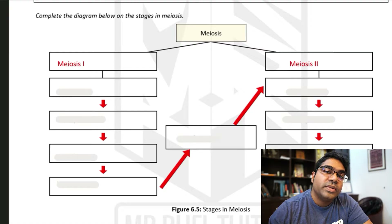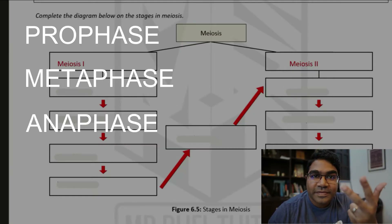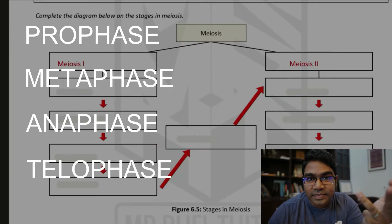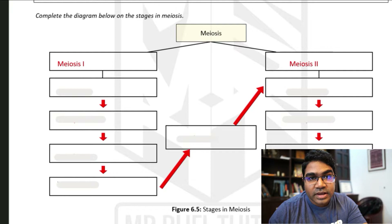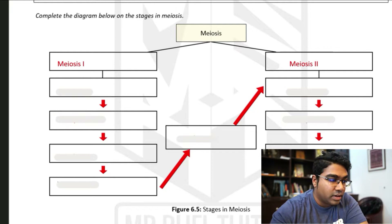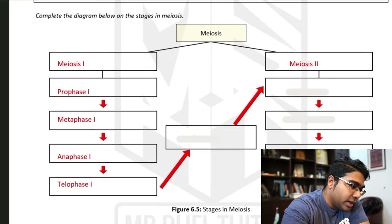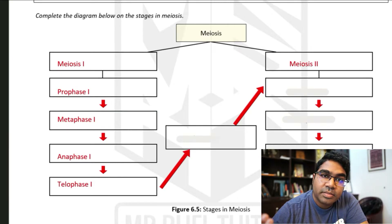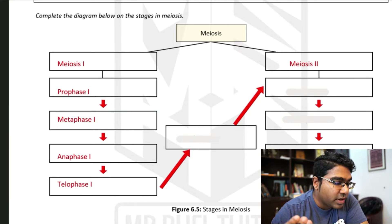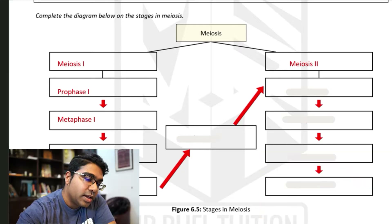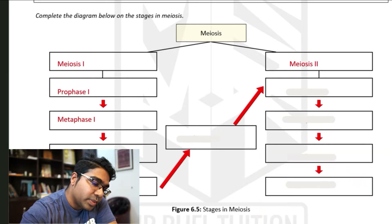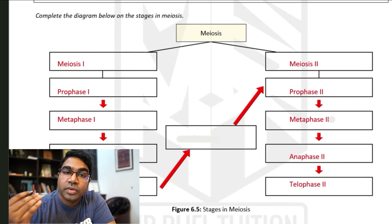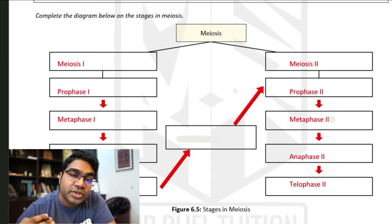In mitosis, we have prophase, metaphase, anaphase, and telophase. And that is the same case here, except we have the number attached to the end of it. So in meiosis 1, we have prophase 1, metaphase 1, anaphase 1, and telophase 1. And the same happens in meiosis 2: prophase 2, metaphase 2, anaphase 2, and telophase 2.